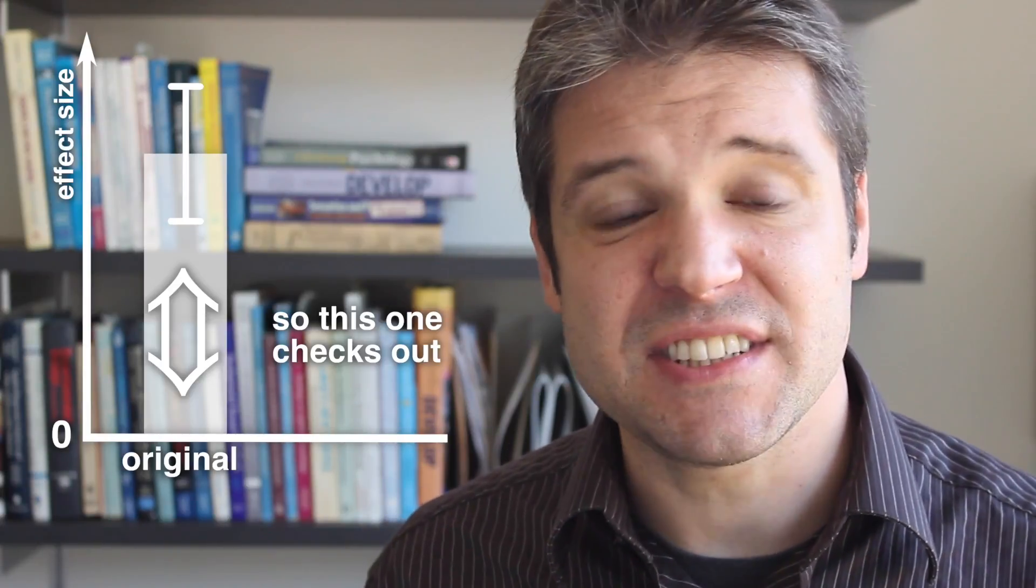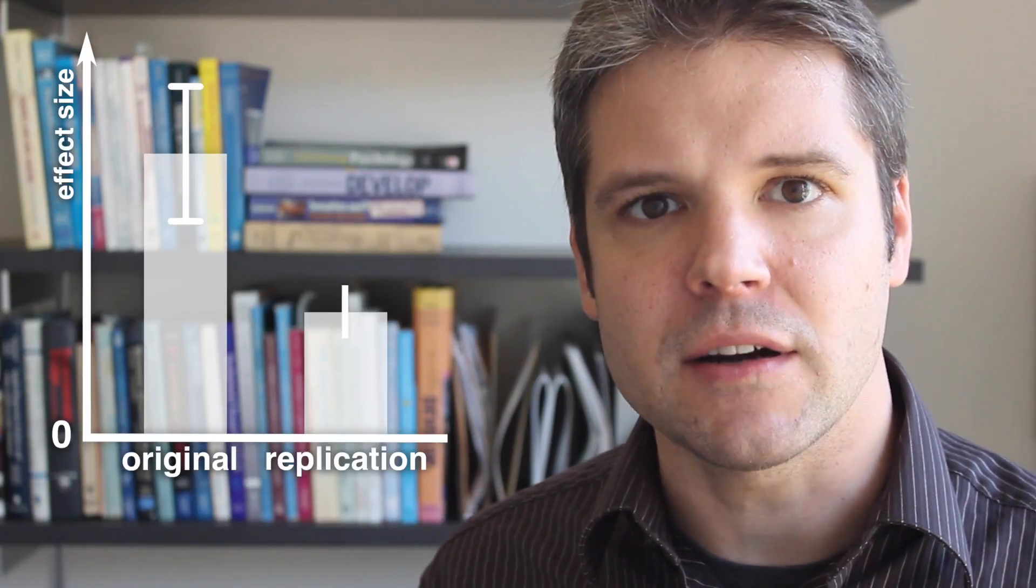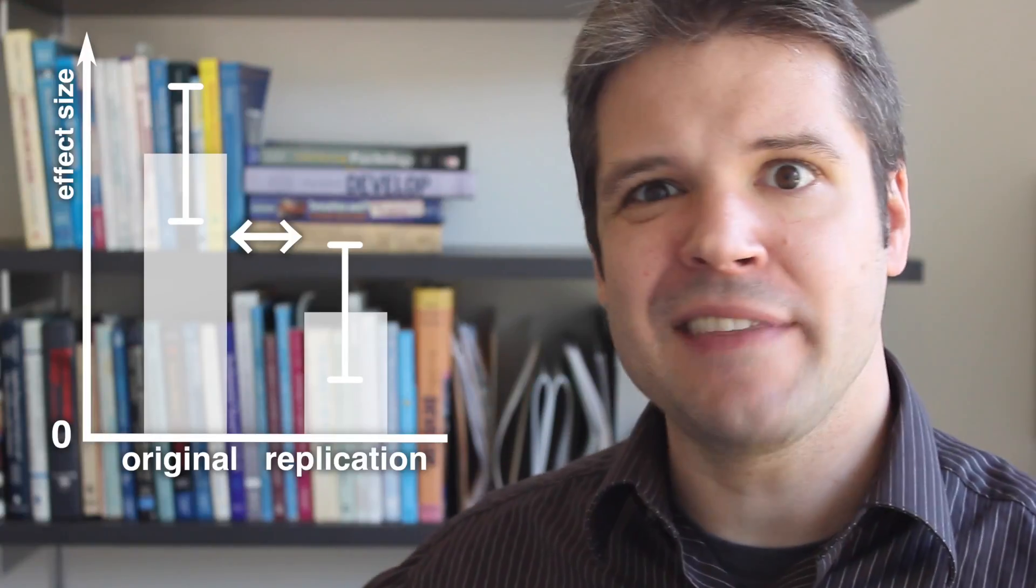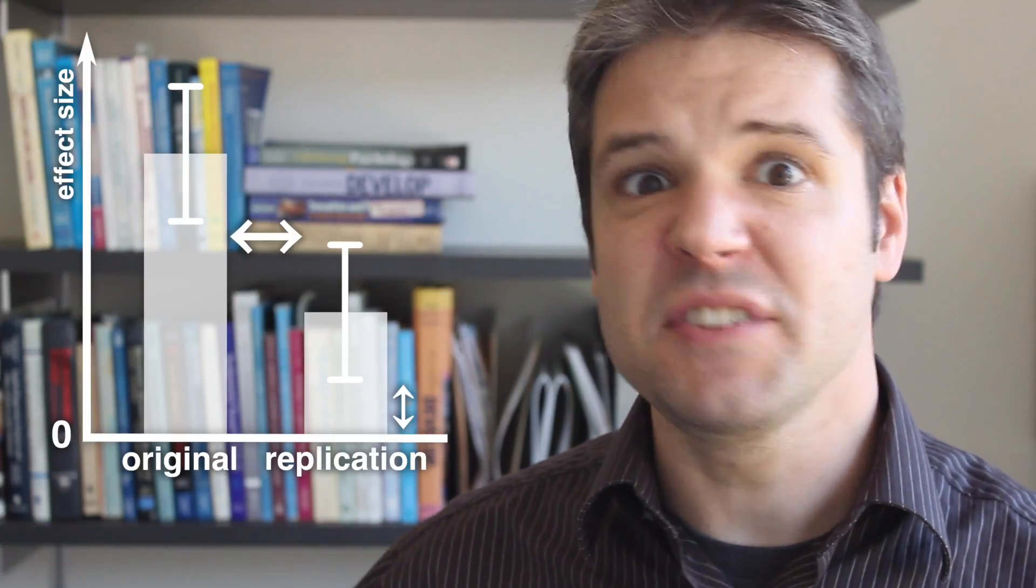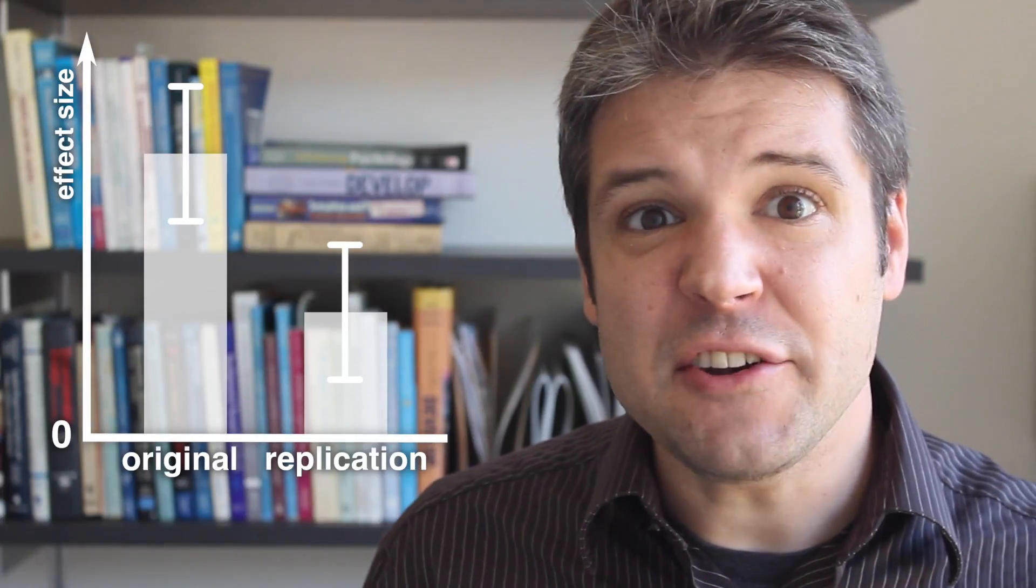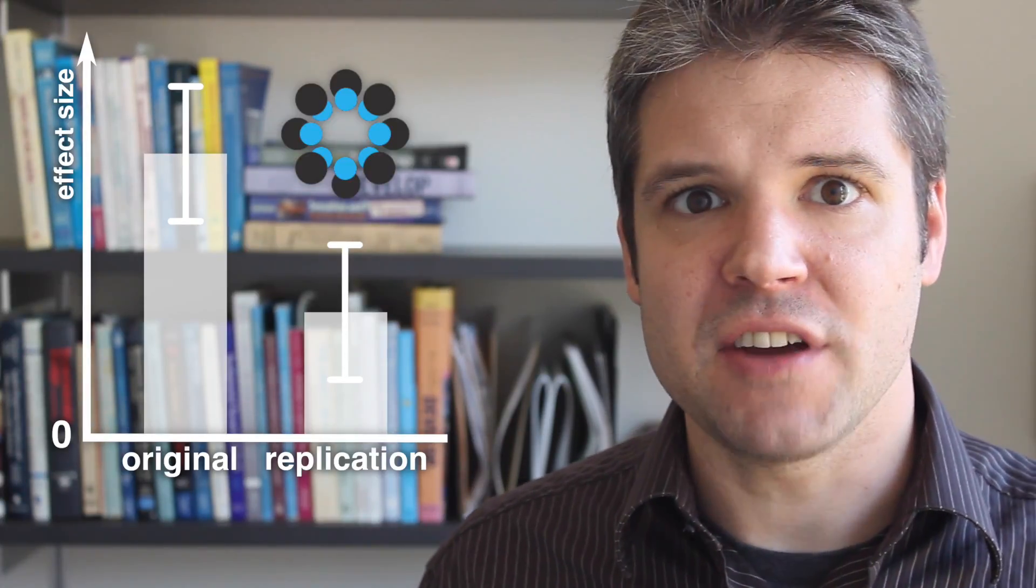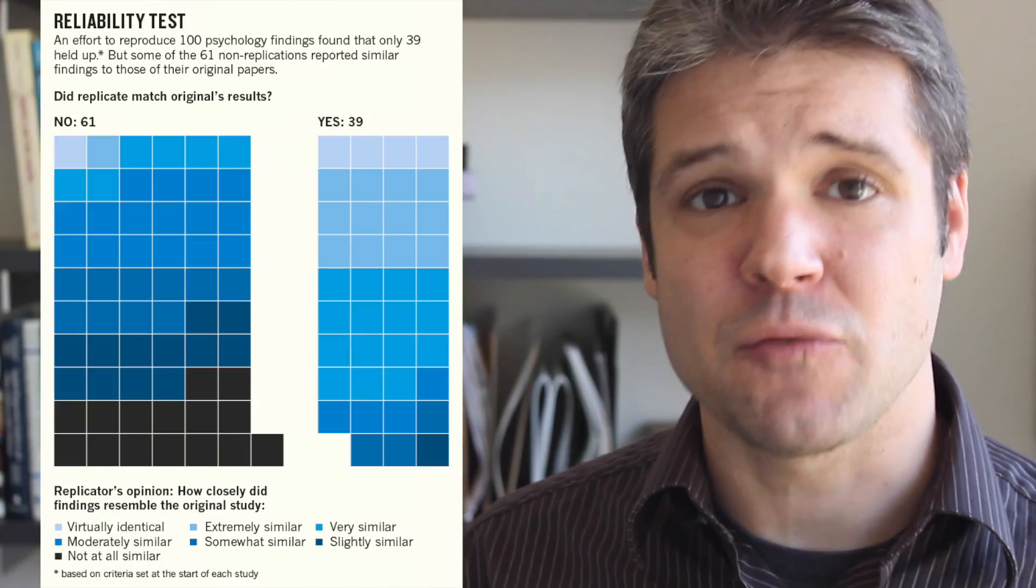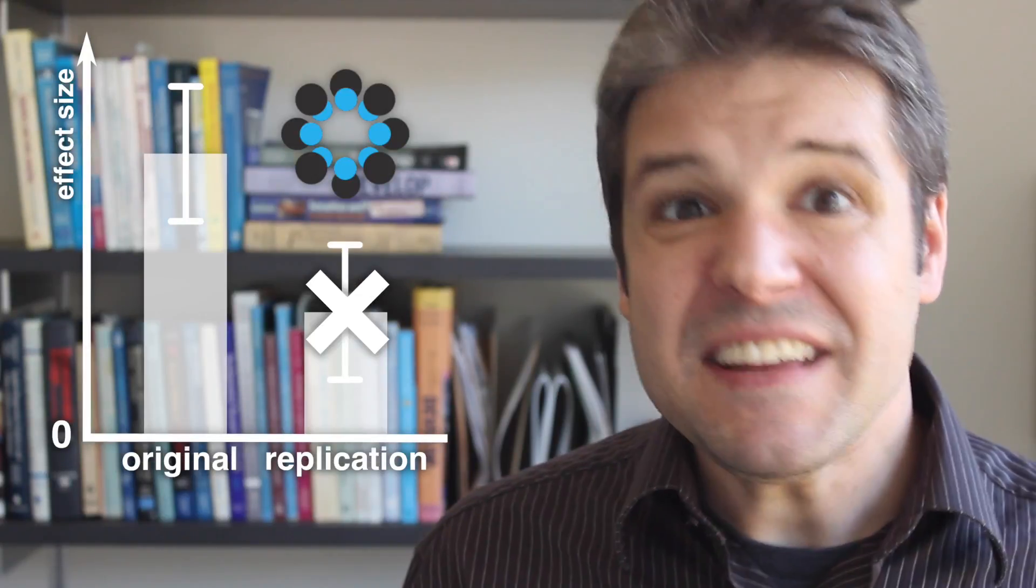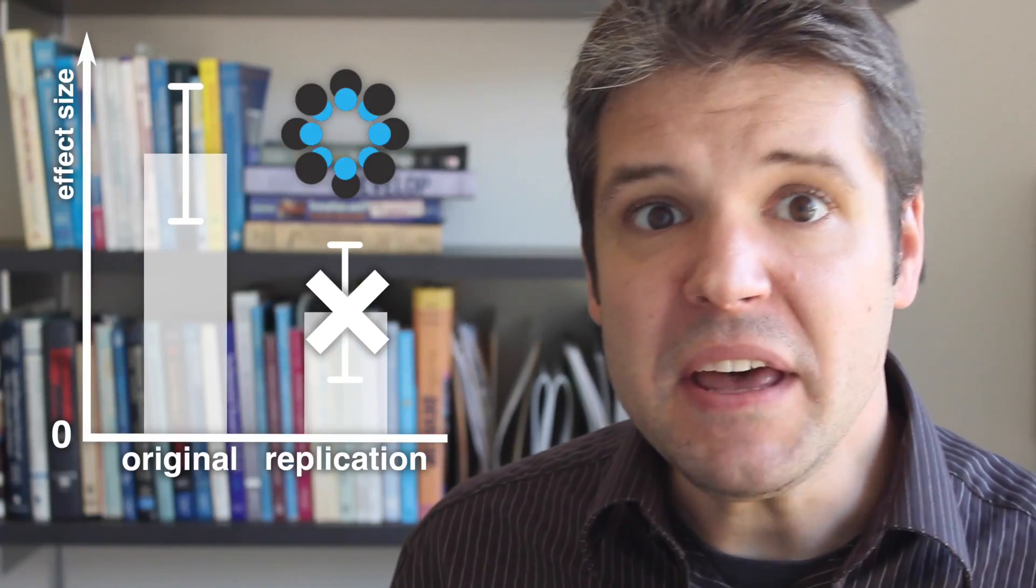What if you run a replication of a successful study, but find that the effect is smaller? The original effect was outside the confidence interval of the replication, but the replication was still different from zero. According to the standards set by the Reproducibility Project, who tried to replicate 100 studies and only found 39 that worked, that counted as a failed replication. And this situation turned out to happen quite a bit.